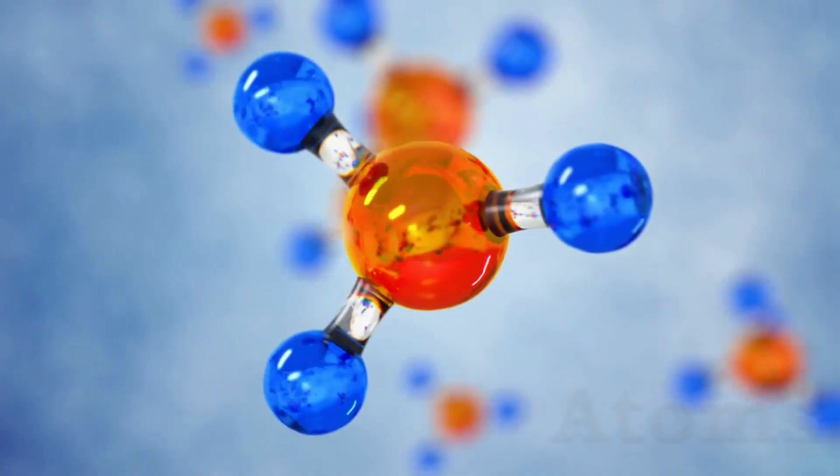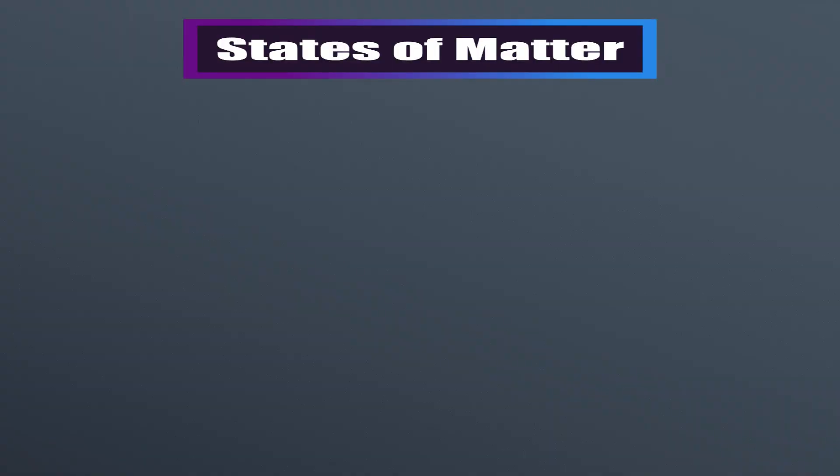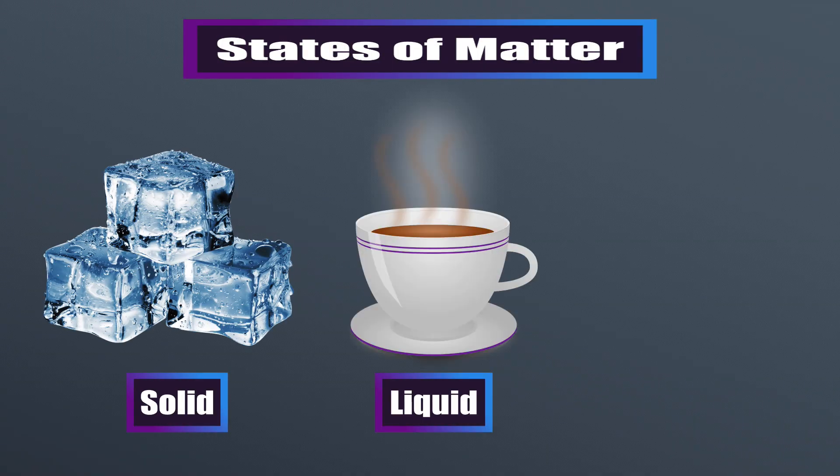Our world and everything in it, and everything outside of it too, is made of matter, which in turn is made of atoms. But they can take different states — states of matter: solids, liquids, and gases.